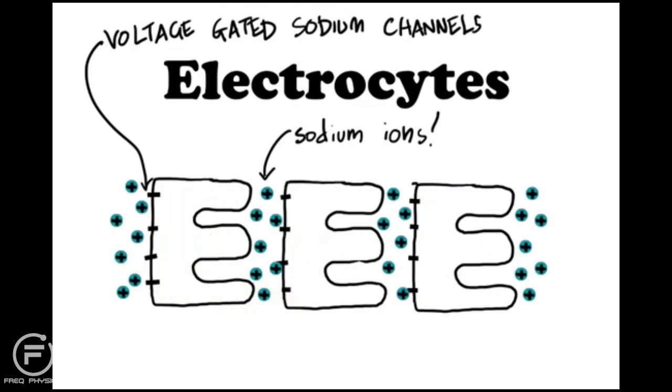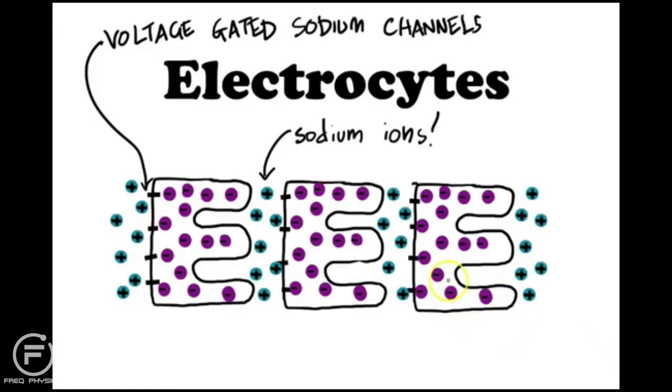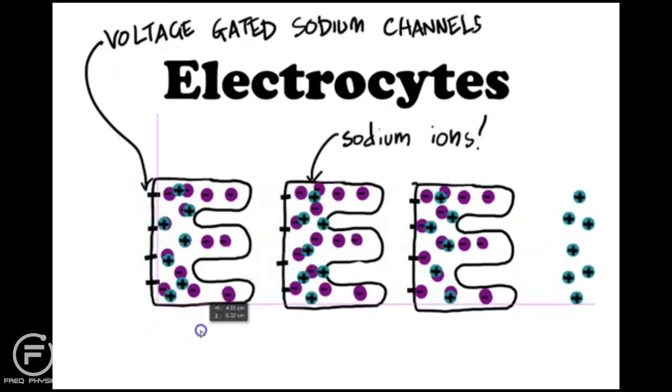So, as a result, what happens? So, as soon as the eel freaks out because it's, say, scared of something happening, it suddenly lets in sodium into the electrolyte. So, boom, they all move like that. Now, as a result, all of the electrons are sort of basically charged only on one side. So, the electrolyte is now on one side very negatively charged and on the other side positively charged. And then this one, positive, negative, positive, negative, positive, negative. And on and on and on.